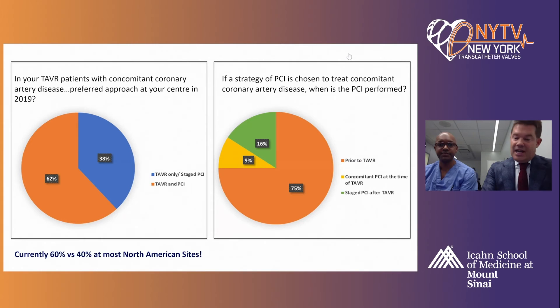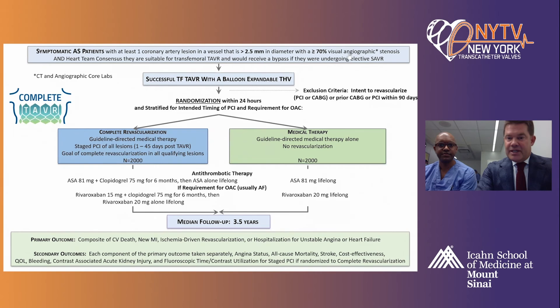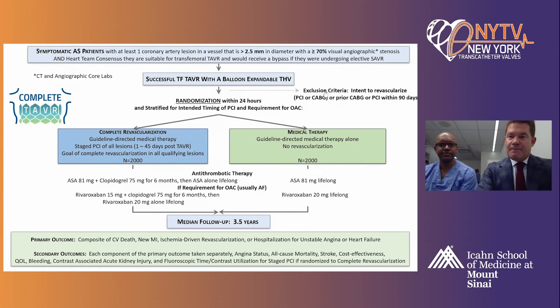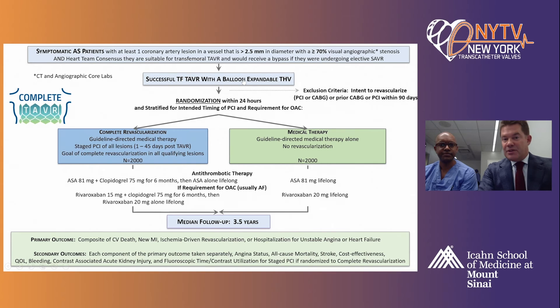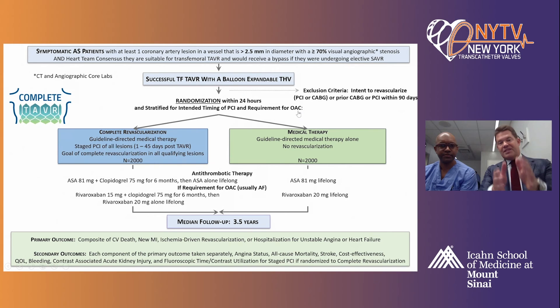Inclusion criteria: symptomatic AS patients with at least one coronary artery lesion in a vessel 2.5 millimeters or greater, and heart team consensus that anatomy is suitable for transfemoral TAVR and for percutaneous revascularization. Patients must have successful transfemoral TAVR with a balloon-expandable THV. If there's an intent to revascularize surgically, that would be an exclusion. After successful transfemoral TAVR, patients are randomized the next day, stratified by intended timing of PCI and requirement for oral anticoagulant.